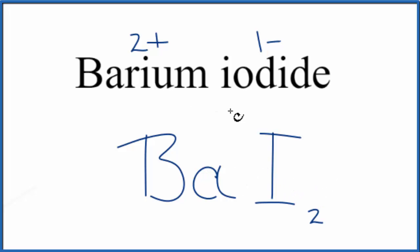So the formula for the ionic compound, barium iodide, is BAI2. This is Dr. B, and thanks for watching.